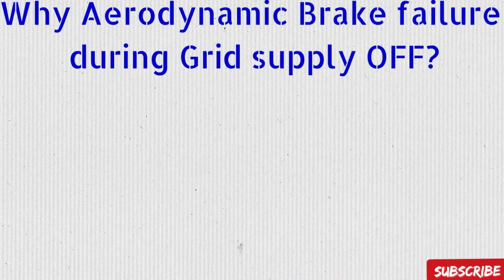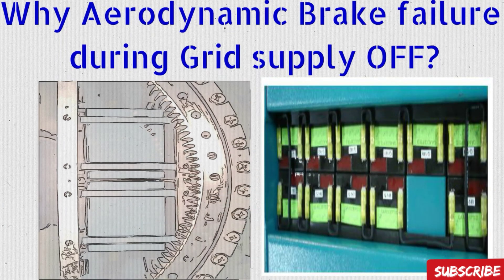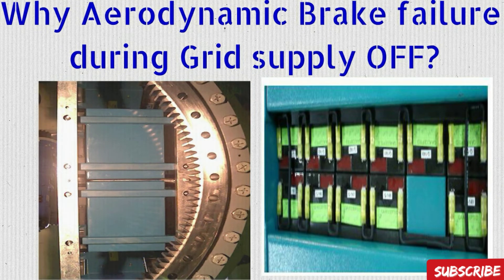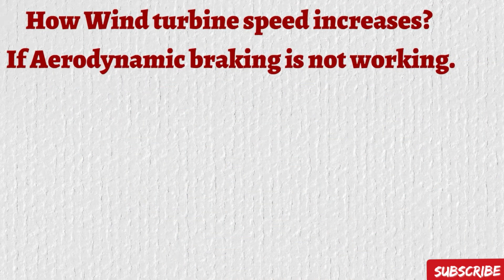Why does aerodynamic braking fail during grid supply cutoff? Generally during grid cutoff there is no supply in the wind turbine, but we immediately need to rotate the rotor blades from 0 to 90 degrees — otherwise rotor speed increases. For this purpose a battery bank is used for each blade. If the battery bank fails, aerodynamic braking will not work, because the battery bank is what provides backup power to the pitch motor through the VFD controller. So battery bank maintenance is very important in wind turbines.